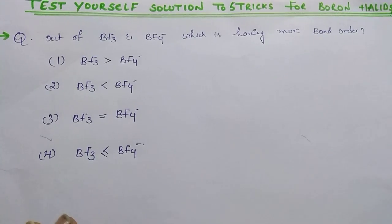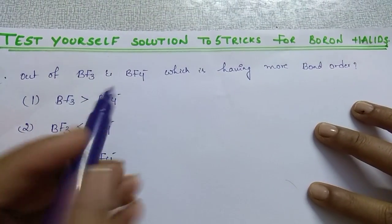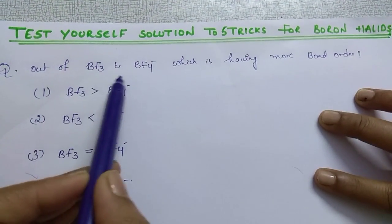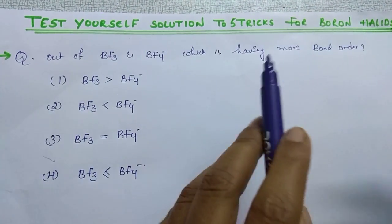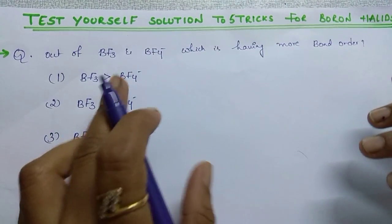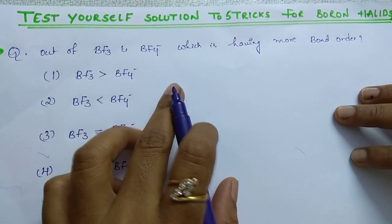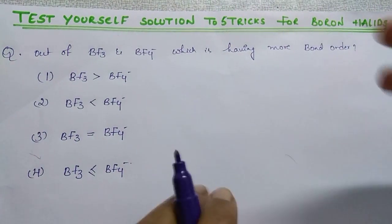And coming to the answer to that question, see once I repeat the question again. Out of BF3 and BF4 minus which is having more bond order. That is the question.